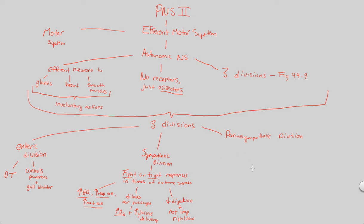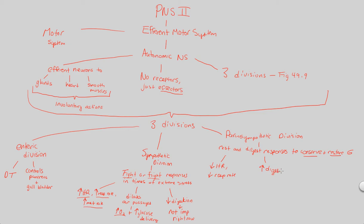The parasympathetic division is in charge of rest and digest responses, as opposed to fight-or-flight responses. These rest and digest responses are in an attempt to conserve and restore energy. When we activate the parasympathetic division, we see a decrease in heart rate, a lot of relaxation, and a decrease in respiration rate. We're not putting our bodies into overdrive; instead, we're devoting metabolic energy to digest — doing exactly what the parasympathetic division implies: resting and digesting. So here we get a direct increase in digestion.